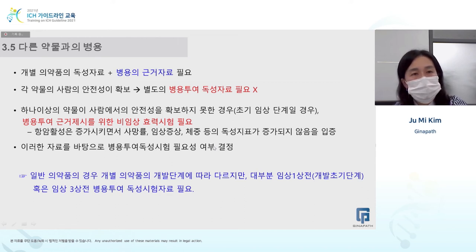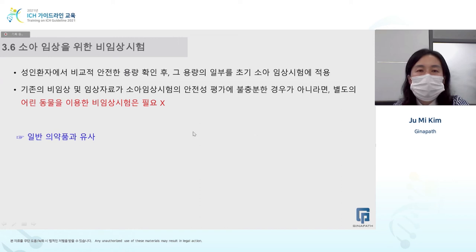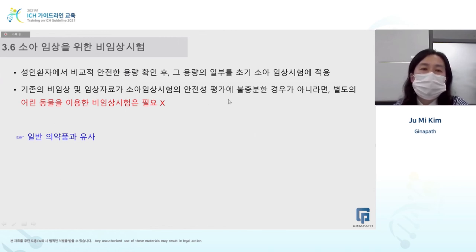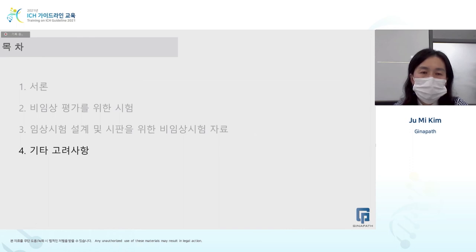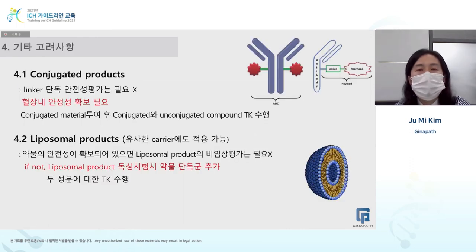For pediatric populations, the approach is similar to non-cancer drugs. A safe dose is confirmed in adult patients, and then a portion of that dose is applied in pediatric clinical trials. If existing non-clinical and clinical data are not sufficient, additional non-clinical studies using young animals are needed. If the data is sufficient, this is not required.